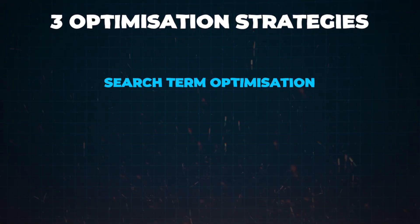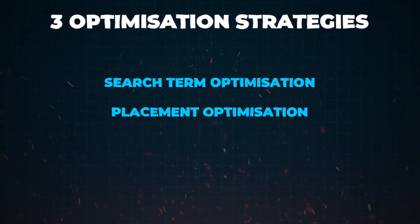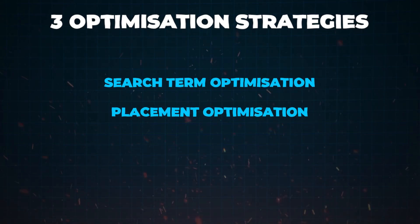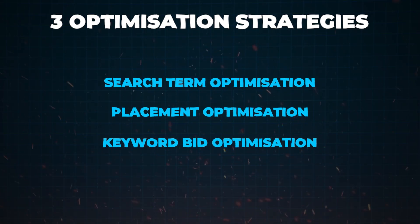When it comes to actually doing this optimization, there are really three main techniques that you want to use, and I'm going to teach you exactly how to do all three in this tutorial. The first is search term optimization. The second is placement optimization. And the third and final technique is keyword bid optimization.